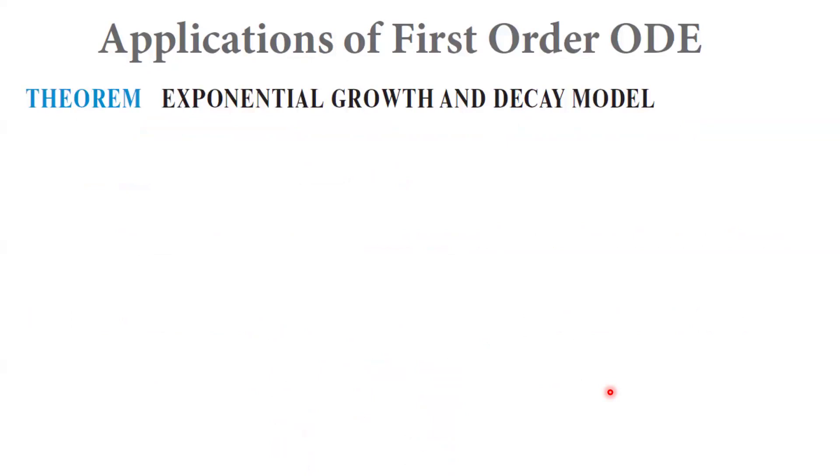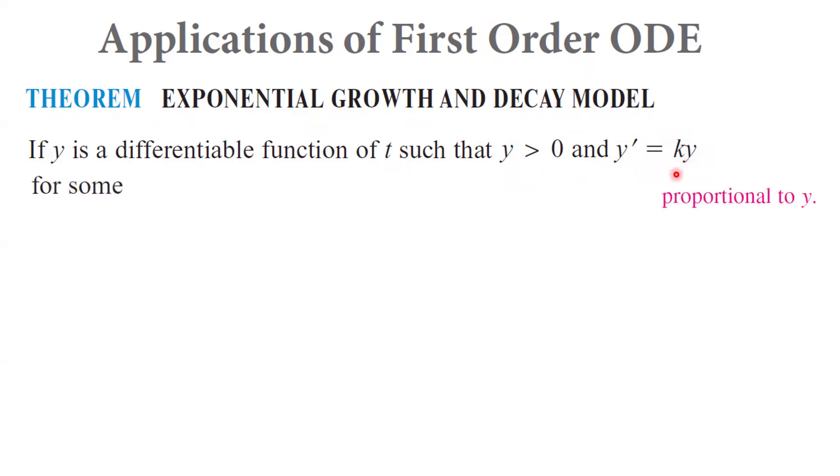We have a theorem called exponential growth and decay model. If y is a differentiable function of t, such that y is positive, and the rate of change of y with respect to the variable t is proportional to y itself, that's why we write it as ky. For some constant like k, then y equals c e to power kt. So from the differential equation, you get a mathematical model.